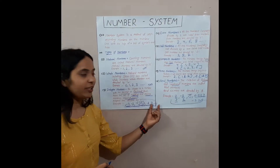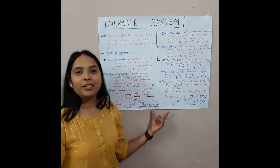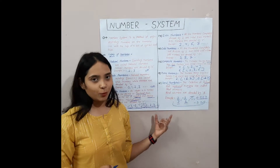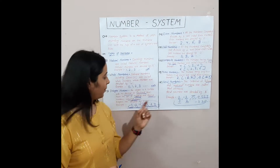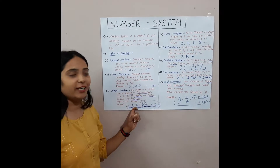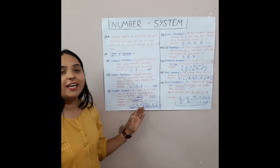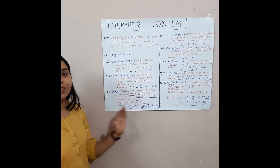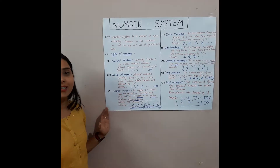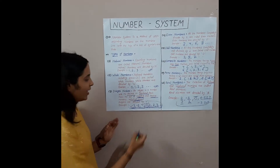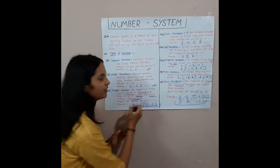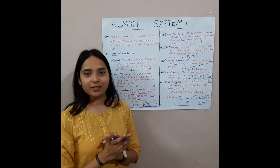1, 2, 3, 4, 5 — these are all positive integers. Minus 1, minus 2, minus 3 and so on — these are all negative integers. And 0 is the zero integer.